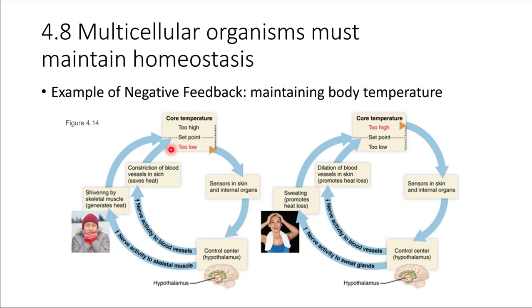Shivering generates a lot of heat by burning through ATP, helping to warm up the muscles. At the same time, the hypothalamus will cause blood vessels to constrict near the surface of the body, bringing blood more towards the center where it's warmer. This helps to conserve heat and not let more heat leave from the surface. Both of these things together raise the body temperature back up toward the set point. Once it's corrected, this signal will stop — that's why it's called a negative feedback loop. There's no more need for this corrective pathway to be activated.